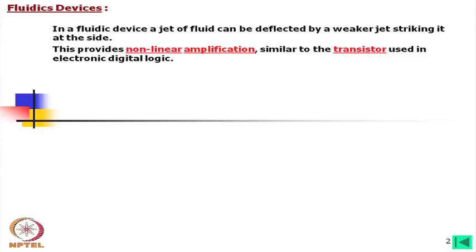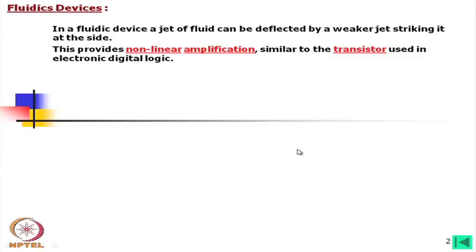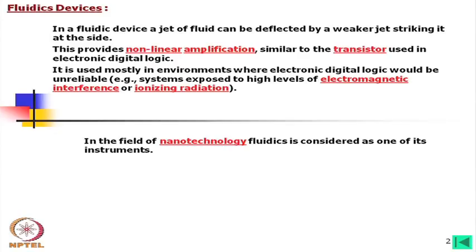It is similar to a transistor used in electronic digital logic. It is used mostly in environments where electronic digital logic would be unreliable — that is, systems exposed to high levels of electromagnetic interference, ionizing radiation, and similar conditions.